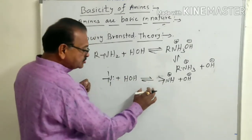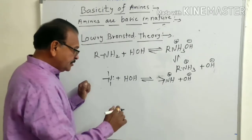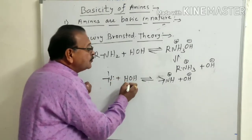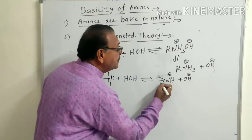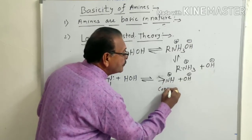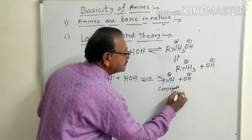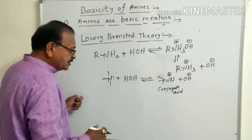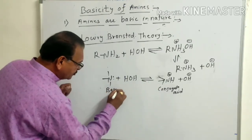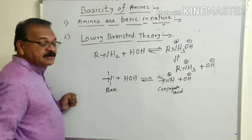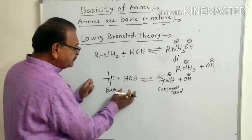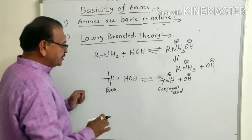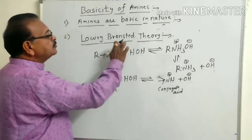In this equilibrium reaction, when the amine accepts a proton from water, we get the protonated amine, whose name is conjugate acid, along with OH negative. The amine acts as a base here because it accepts the proton from water, which acts as the acid. So according to Lowry-Brønsted theory, amines act as bases.